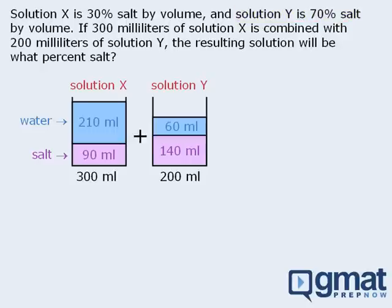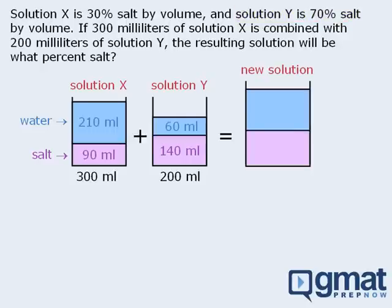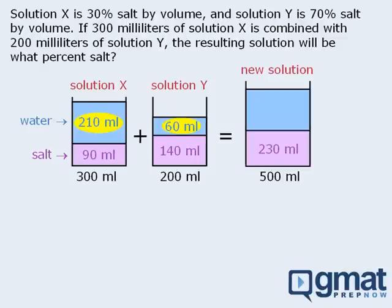Now when we combine these two solutions we get a new solution, which we will draw with the salt and water separated. To determine the various volumes of this new solution, we will combine like parts. Since we are combining 300 mL of solution X and 200 mL of solution Y, the new solution will have a volume of 500 mL. Since solution X contains 90 mL of salt and solution Y contains 140 mL of salt, the new solution must have a total of 230 mL of salt. Since solution X has 210 mL of water and solution Y has 60 mL of water, the new solution must have a total of 270 mL of water.